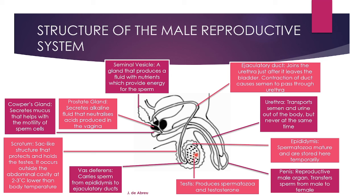The epididymis is where spermatozoa mature and are stored temporarily. Then the vas deferens carries the sperm cells to the ejaculatory ducts. The ejaculatory ducts join the urethra just after it has left the bladder, and the contraction of the ducts causes semen to pass through the urethra.